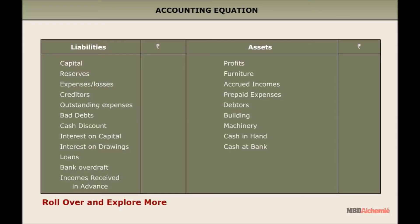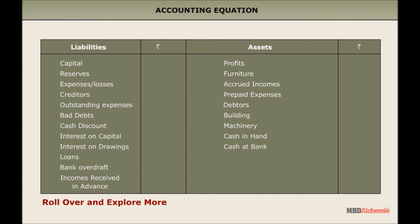Rules for accounting equations: Capital is shown on the liabilities side of the balance sheet. Reserves are undistributed profits, and hence are shown as an addition to capital on the liabilities side. Expenses or losses are also shown on the liabilities side of the balance sheet.